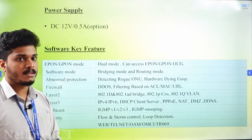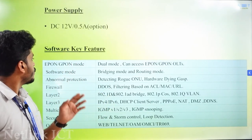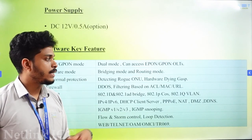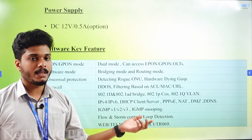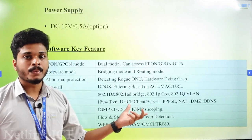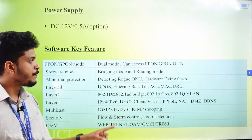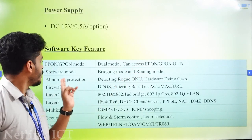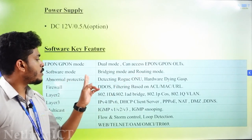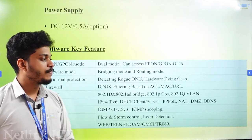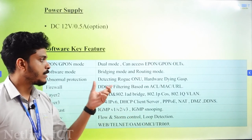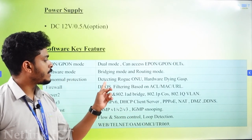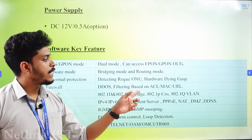We will look at the software key features. E-PON and G-PON dual mode — we already have a dual mode ONT. We are using G-PON OLT with a dual mode ONT. Software modes are Bridging Mode and Routing Mode. Detecting Rogue ONU and hardware diagnostics are also supported.